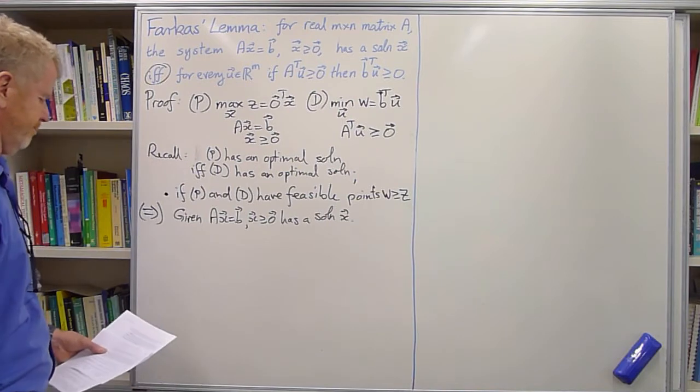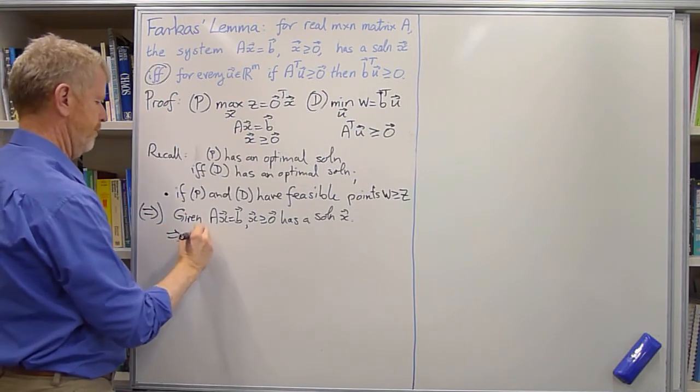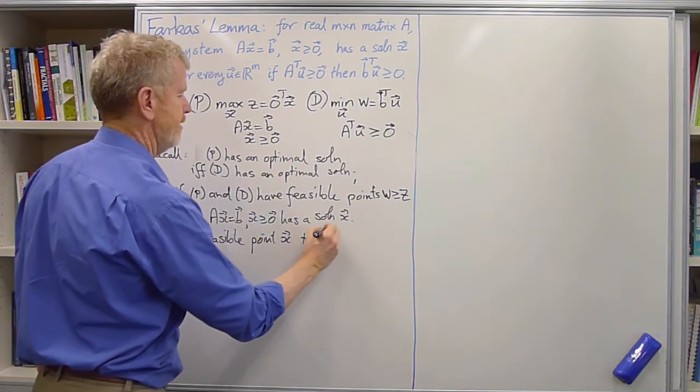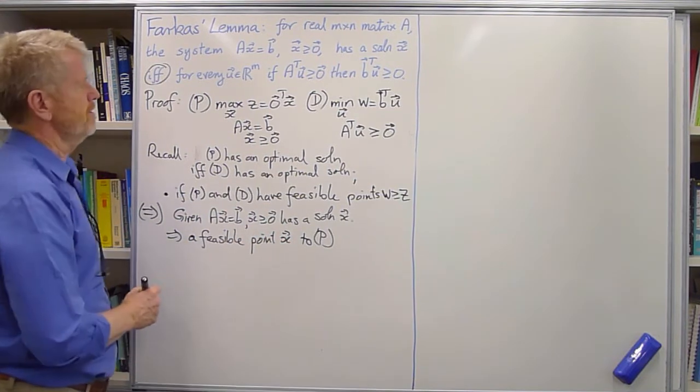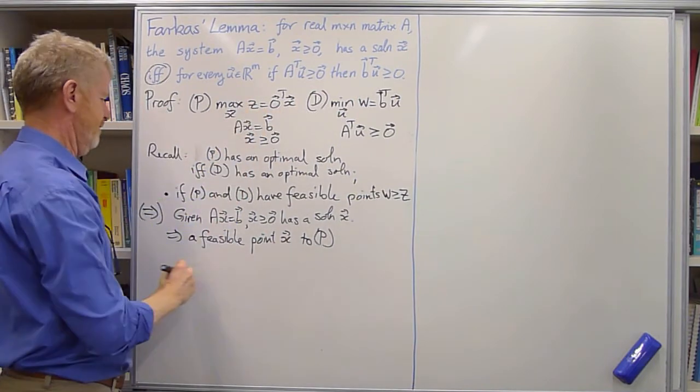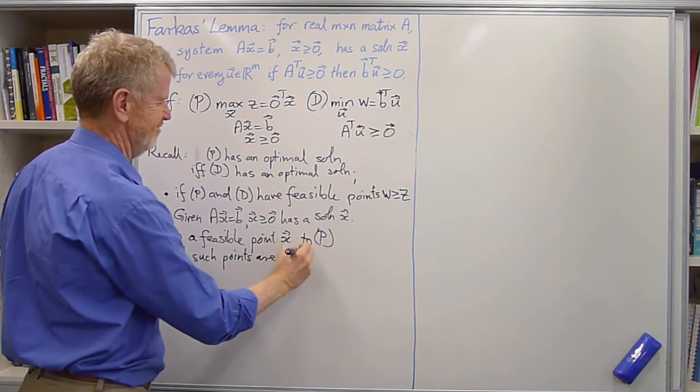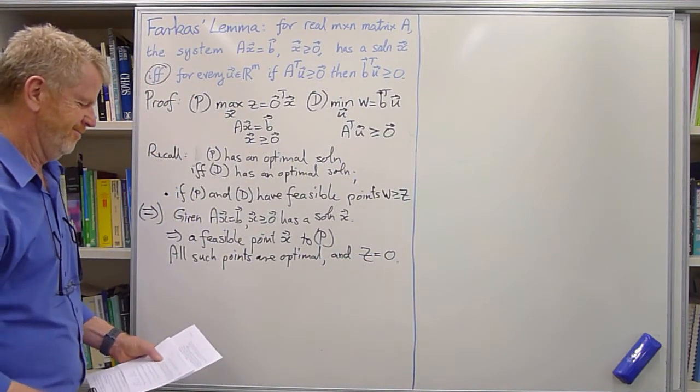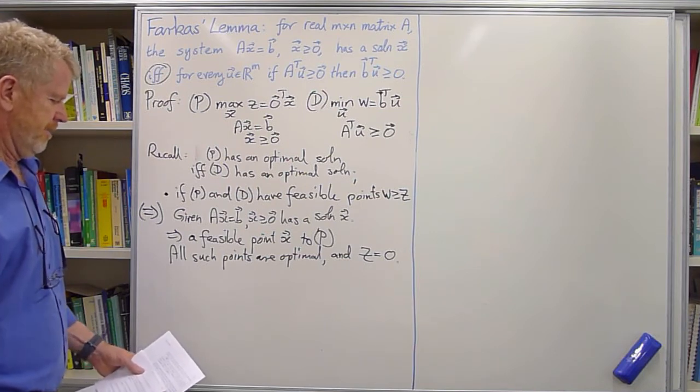All right, what can we introduce from that? Well, it means there is a feasible point to the primal. There exists a feasible point X to P. And in fact, all such feasible points are optimal because the objective function is particularly simple, namely 0 times X. And Z equals 0, which I'll come into play in a second.